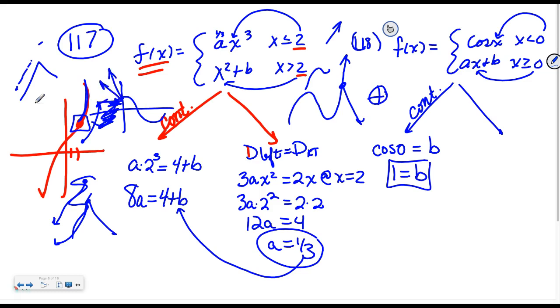But is it going like this, like this, like this? I obviously need it to not make a cusp. So the next thing I do is I say the derivative as I come in from the left must equal the derivative as I come in from the right. The derivative of cosine is negative sine. The derivative of ax plus B is just A.